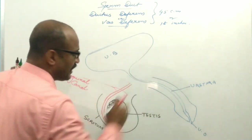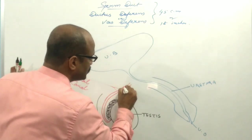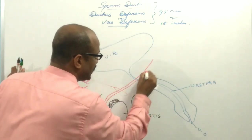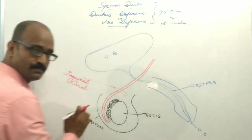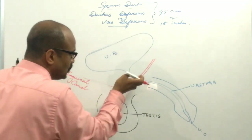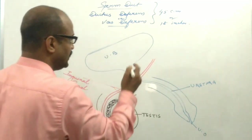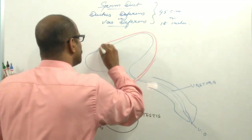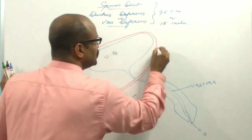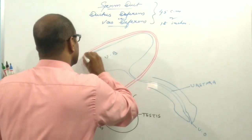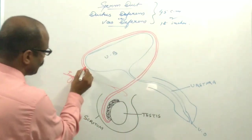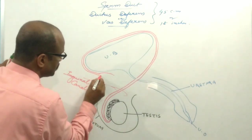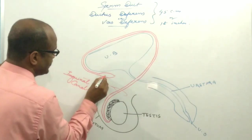Then inside the pelvic cavity, the sperm duct arches medially over the urethra and descends along the posterior aspect of the urinary bladder. This duct terminates into a dilated structure known as the ampulla.